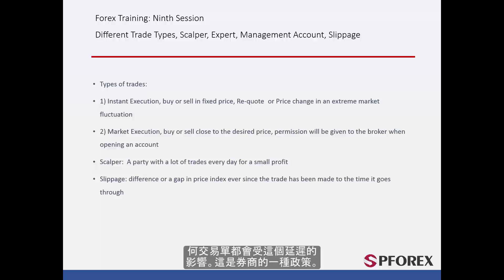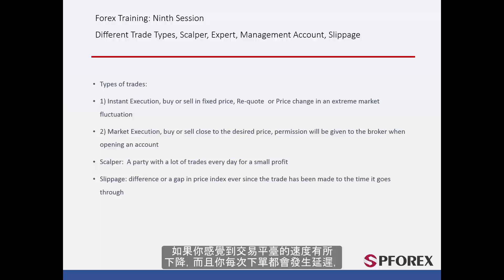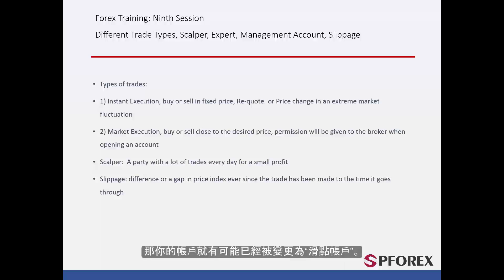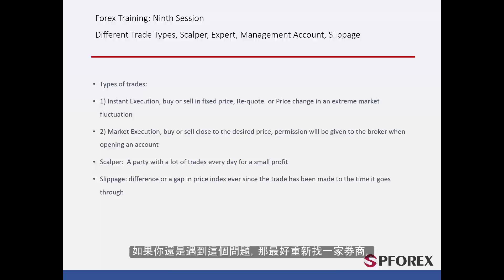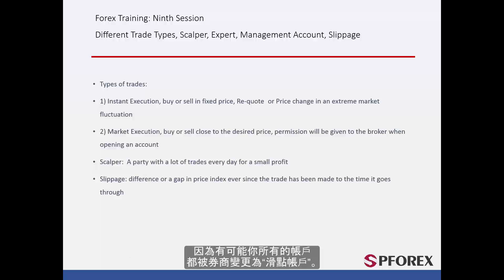This is a type of broker's policy. If you ever feel that the platform speed is reduced and you have a delay every time you are interested in placing an order, it is possible that your account has been changed to a slippage type. To overcome this problem, you need to open a new account under your name or any other name. If you are still facing the same problem, you should look for a new broker because it is possible that all accounts you have been working with have been changed to this slippage type.